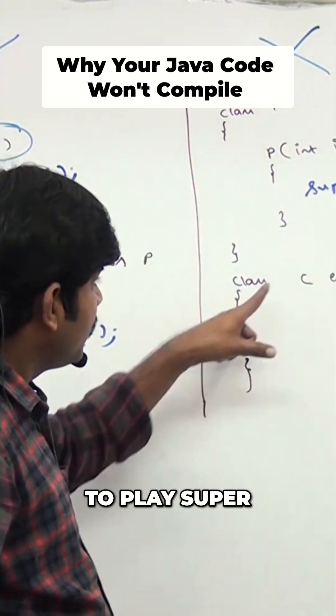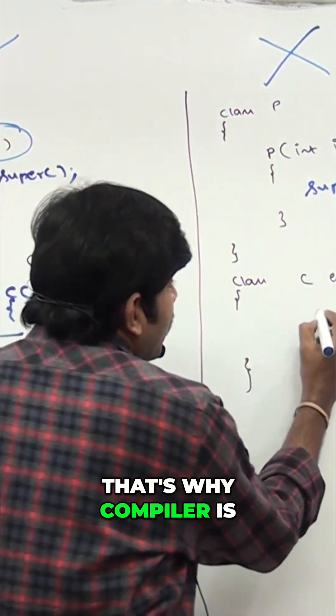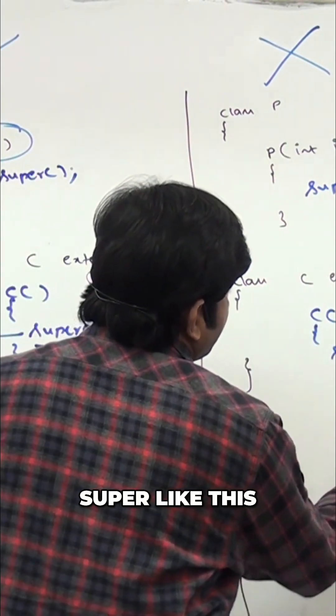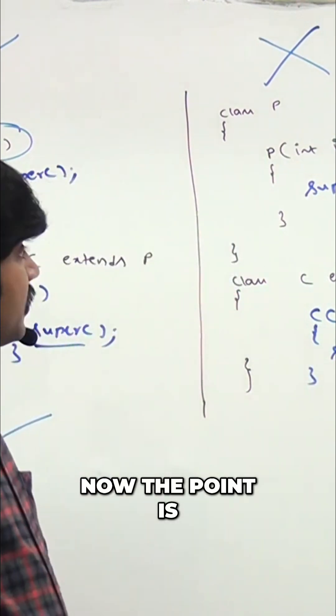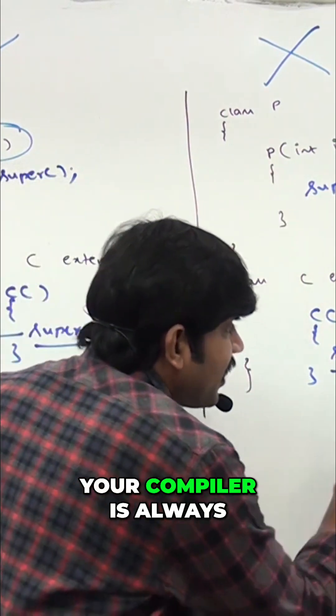The compiler is always going to place super. Here, you did not write any constructor, that is why the compiler is going to generate a default constructor with super like this. Now, the point is in the parent class, your compiler is always going to place super.